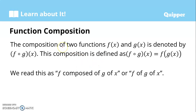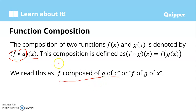So when we say function composition, if we have two functions f of x and g of x, then the composition of two functions is denoted by this. This is read as f composed of g of x. So this composition is defined as: f composed of g of x is equal to f of g of x.